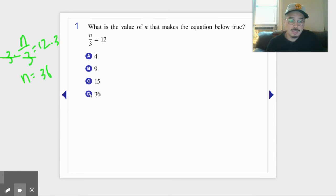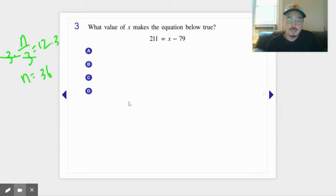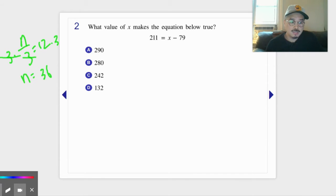Number two, same thing. It's saying what value would make that true? So you would rewrite and then you would add 79 to both sides. So x is... 1 plus 7, 8, 9... 290.